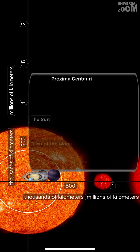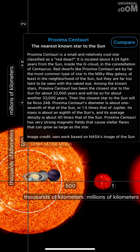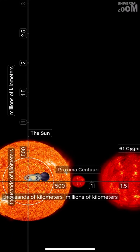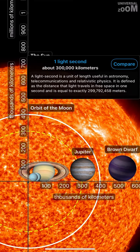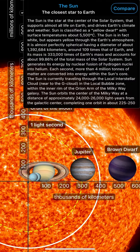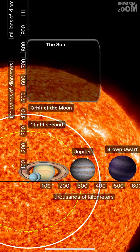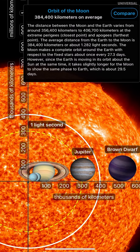Proxima Centauri, the nearest known star to the Sun. Sun. One light second, about 300,000 km. The Sun, the closest star to Earth. Orbit of the Moon, 384,400 km on average.